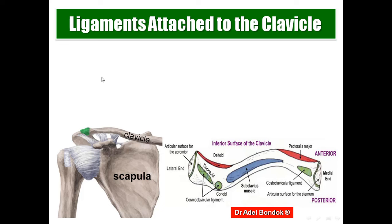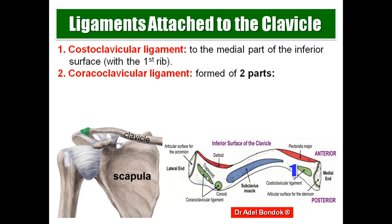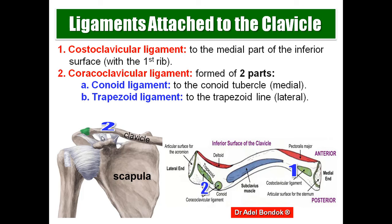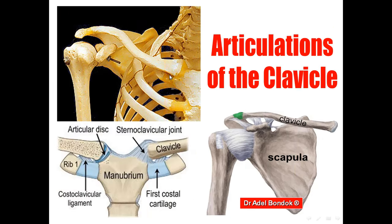The ligaments attached to the clavicle: the first is the costoclavicular ligament, attached to an impression on the medial third of the inferior surface, connecting the clavicle and the first costal cartilage. The second is the coracoclavicular ligament, formed of two parts — the conoid ligament attaching to the conoid tubercle and the trapezoid ligament attaching to the trapezoid line. The third is the coracoacromial ligament, plus ligaments of the acromioclavicular and sternoclavicular joints.